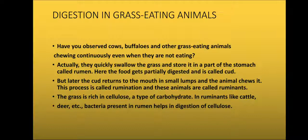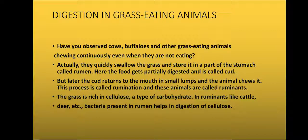In the rumen, the food gets partially digested and is called cud. When the animal is not eating, this cud returns to the mouth in small lumps and the animal chews it properly. This process of returning cud into the mouth and chewing it again is known as rumination.